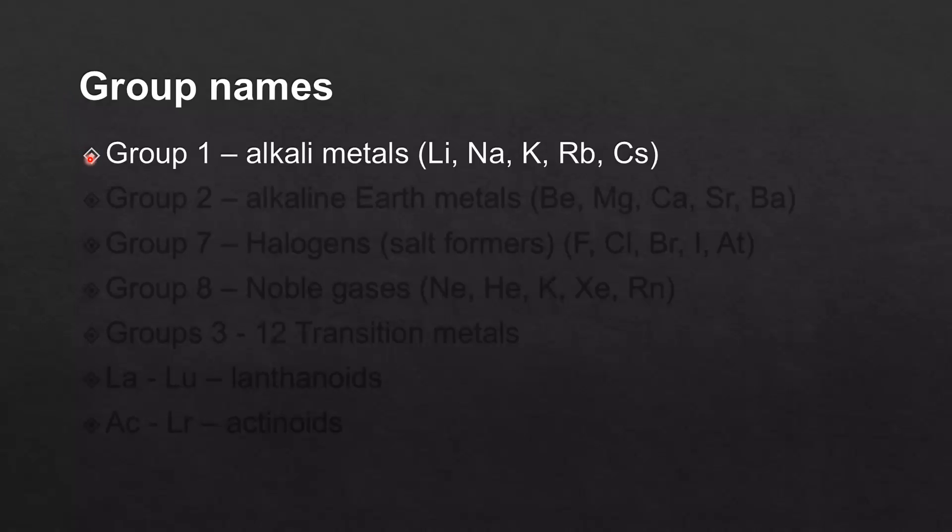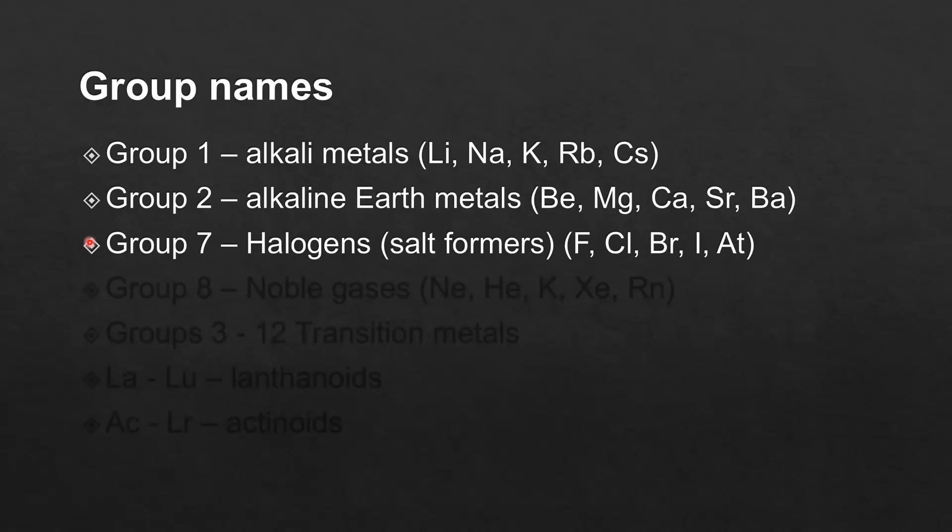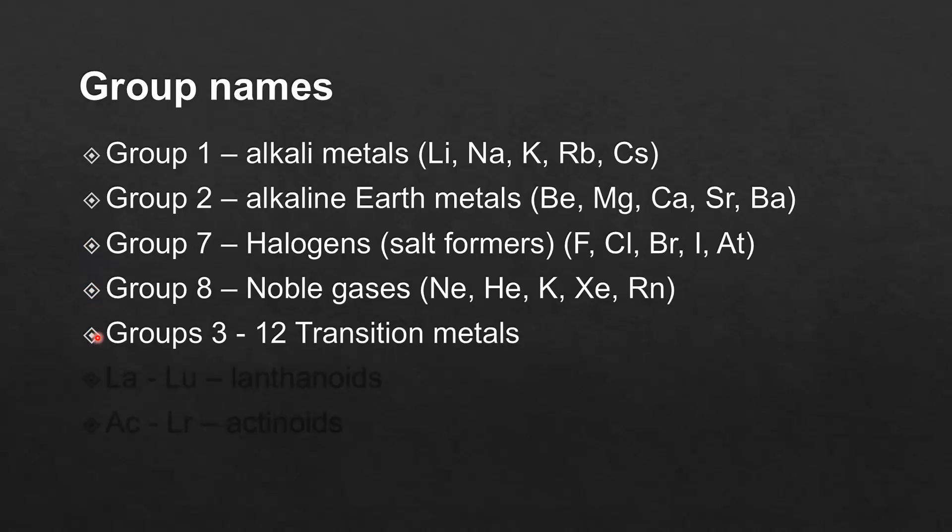So group 1 are known as the alkali metals. Group 2 are the alkaline earth metals. Group 7 are the halogens, which means salt formers. Group 8 are the noble gases. Groups 3 to 12 are the transition metals. Elements La to Lu are the lanthanoids, and elements Ac to Lr are the actinoids.